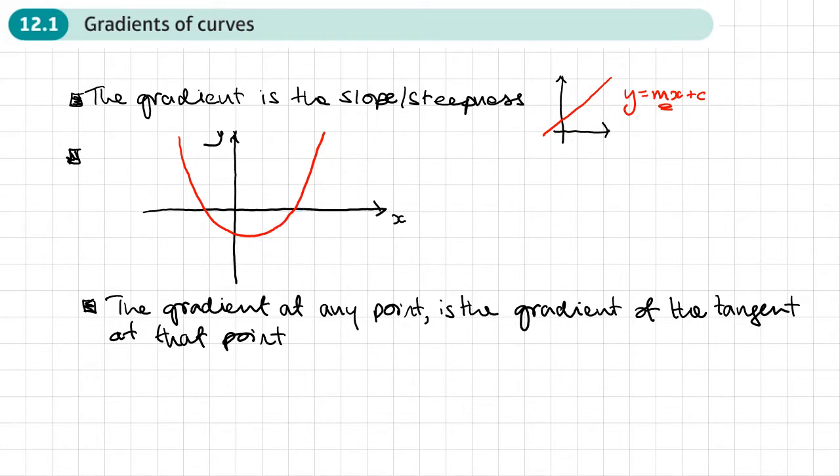Then here, the tangent starts to get more and more steep - the gradient gets steeper. If I went here, for example, and drew that line, it's meant to be just touching at that point there. You can see it's slightly more steep there.